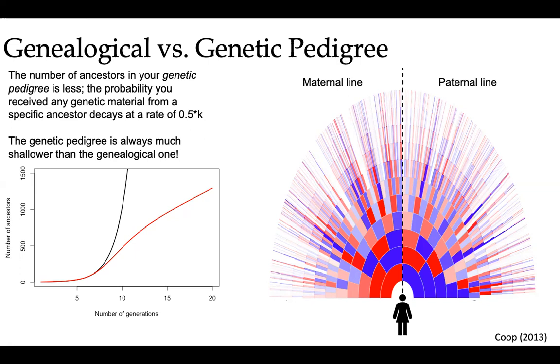Let's juxtapose that with your genetic pedigree. Your genetic pedigree is a lot fewer individuals, and it actually begins to flatten off and decay faster than your genealogical pedigree. This is because the probability that you inherited any genetic material at all from a given ancestor is one-half to the number of generations back to that specific ancestor. This is based on Mendelian inheritance. Since your mother is only going to give you one set of chromosomes, you have a 50% chance of not receiving any genetic material from your maternal grandfather or grandmother.